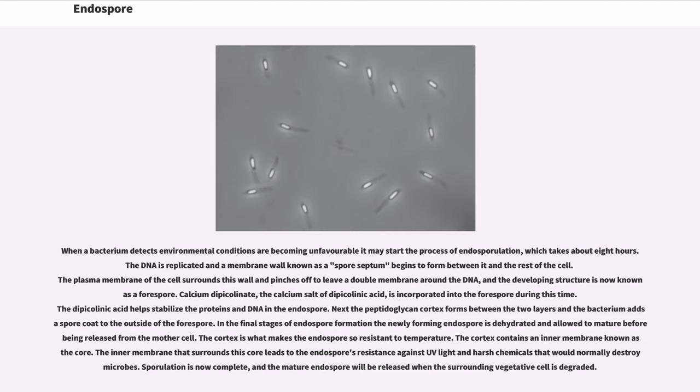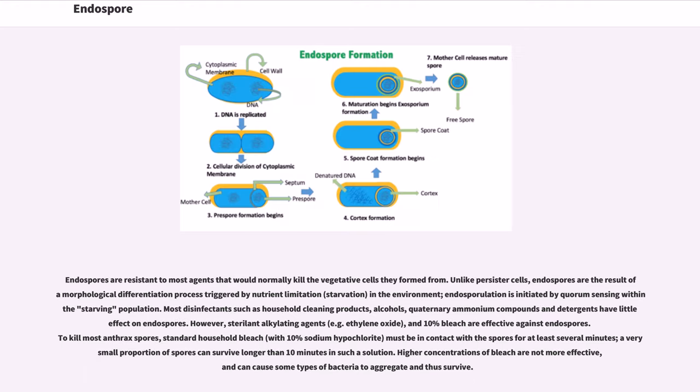The mature endospore will be released when the surrounding vegetative cell is degraded. Endospores are resistant to most agents that would normally kill the vegetative cells they formed from. Unlike persister cells, endospores are the result of a morphological differentiation process triggered by nutrient limitation in the environment. Endosporulation is initiated by quorum sensing within starving population.